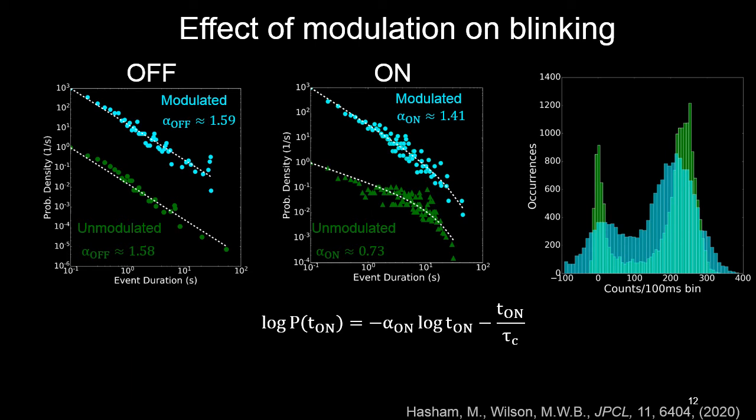But you can see that this presents the risk of truncating any long on times. In particular for us, it meant that any on events longer than 10 seconds would get truncated by the background subtraction, meaning the dot would look off after 10 seconds. This would give rise to exactly the effect that we thought we were seeing.